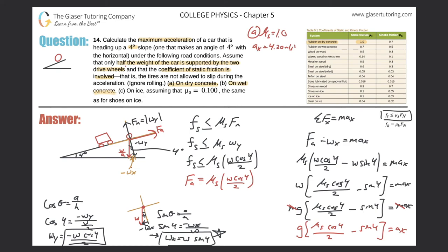For letter B on wet concrete: rubber on wet concrete gives μs = 0.7. Plugging in: ax = 9.8 × [0.7 × cos(4°)/2 − sin(4°)]. Calculating: 0.7 × cos(4°) ÷ 2 − sin(4°), then multiply by 9.8. We get ax = 2.74 meters per second squared.